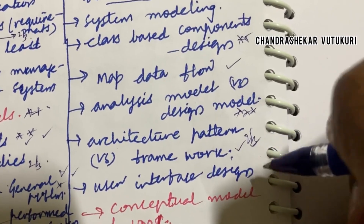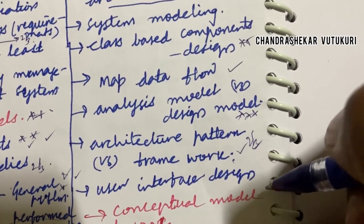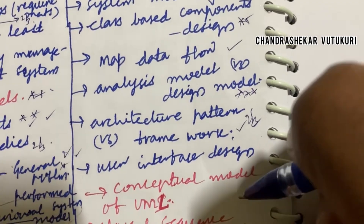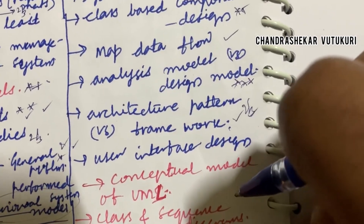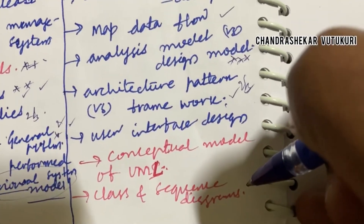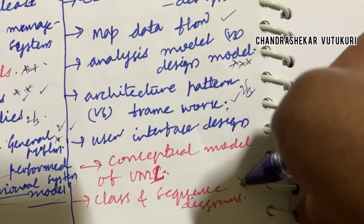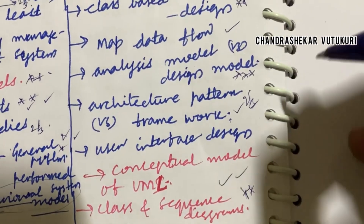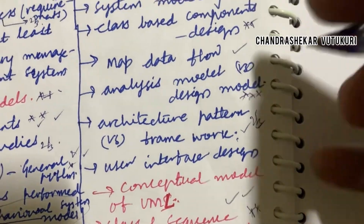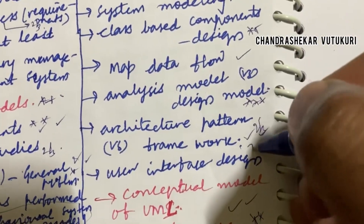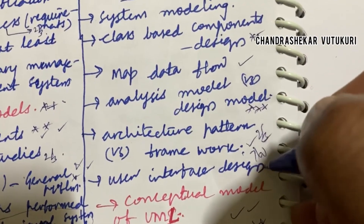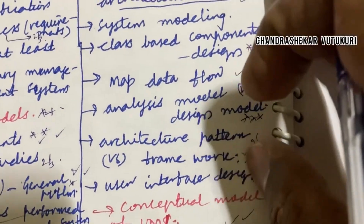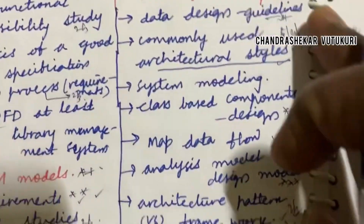User interface design, as well as the conceptual model of UML, and class and sequence diagrams — related to the diagrams they will be asking general questions and you need a framework to work them out. This is said to be 7A as well as 7B.